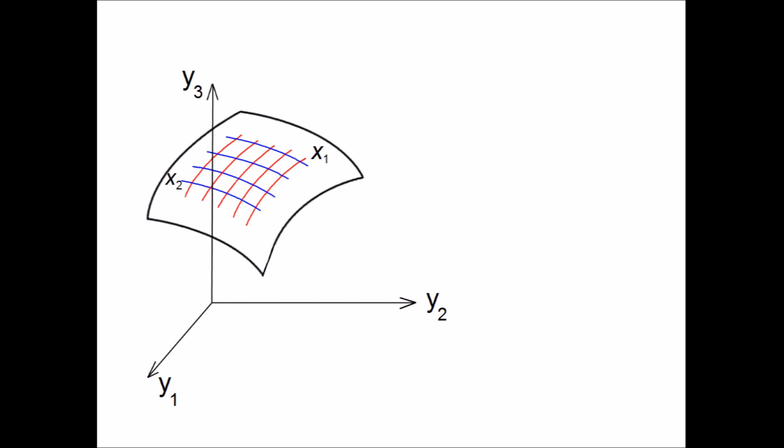The different color directions do not have to be perpendicular. As long as the same color lines do not cross, this is a valid coordinate system. Now, since the position vector y and the x coordinates both define the same surface, we can express y explicitly as a function of x1 and x2.